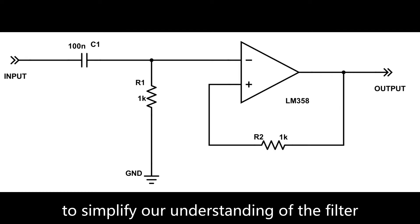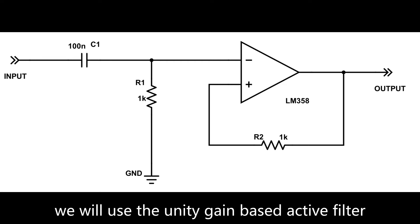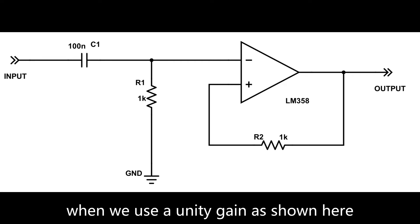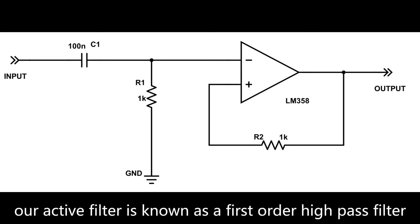To simplify our understanding of the filter, we will use the unity gain based active filter. When we use a unity gain as shown here, our active filter is known as a first order high pass filter.